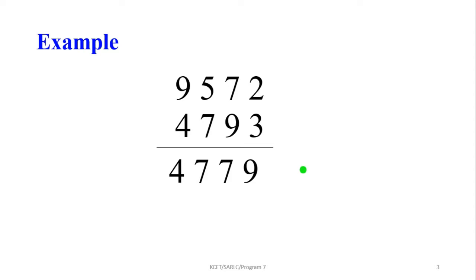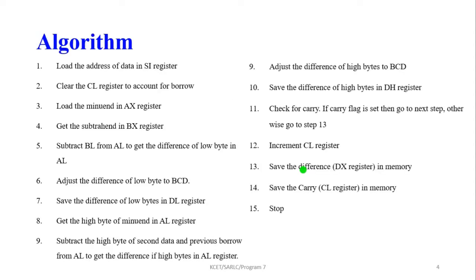In the example, we take two data values: 9572 and 4793. The final BCD result is 4779. Now we write the algorithm: load the address of data into the SI register, then clear the CL register to account for the borrow. Load the minuend into the AX register and get the subtrahend into the BX register — it is 16-bit data, so the minuend goes into AX and the subtrahend into BX.